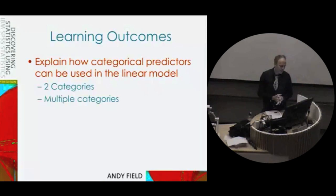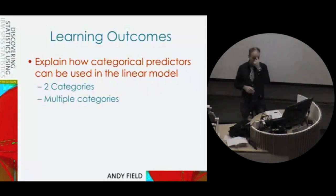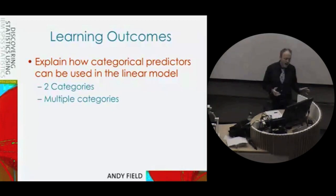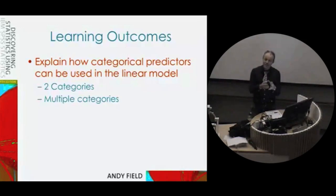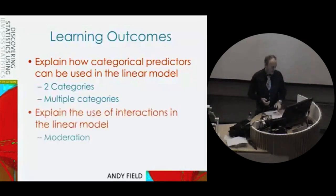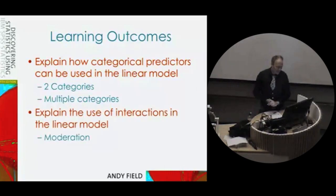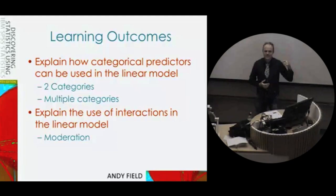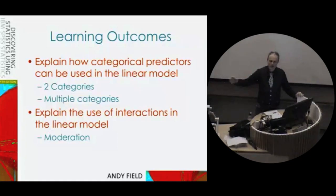The first bit of today is really going to be looking at categorical predictors, which is essentially the link to all the stuff we're moving on to next week. The other thing we're going to look at is something called moderation. The reason for going into this now is it's a precursor to some of the stuff we'll cover later in the module, including interactions in complicated experimental designs.